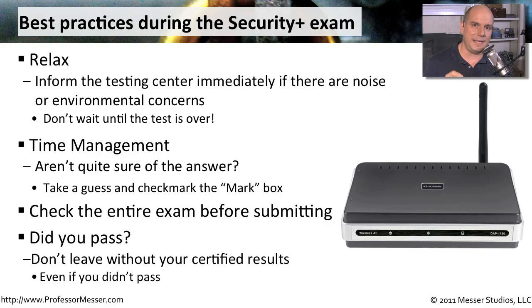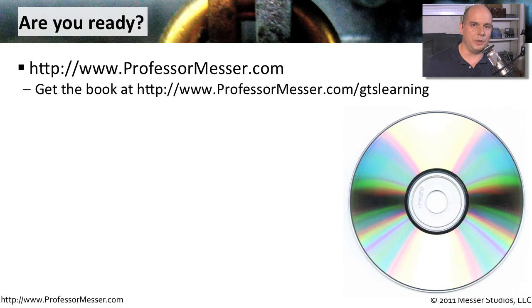Even if you don't pass, make sure you get your test results — it should tell you how much of each individual area you got right or wrong. You can also consider taking the replacement exam very quickly; you can take another exam right then as long as they have a spot available. But if you fail twice in a row, you have to wait at least 14 days before taking the third attempt.